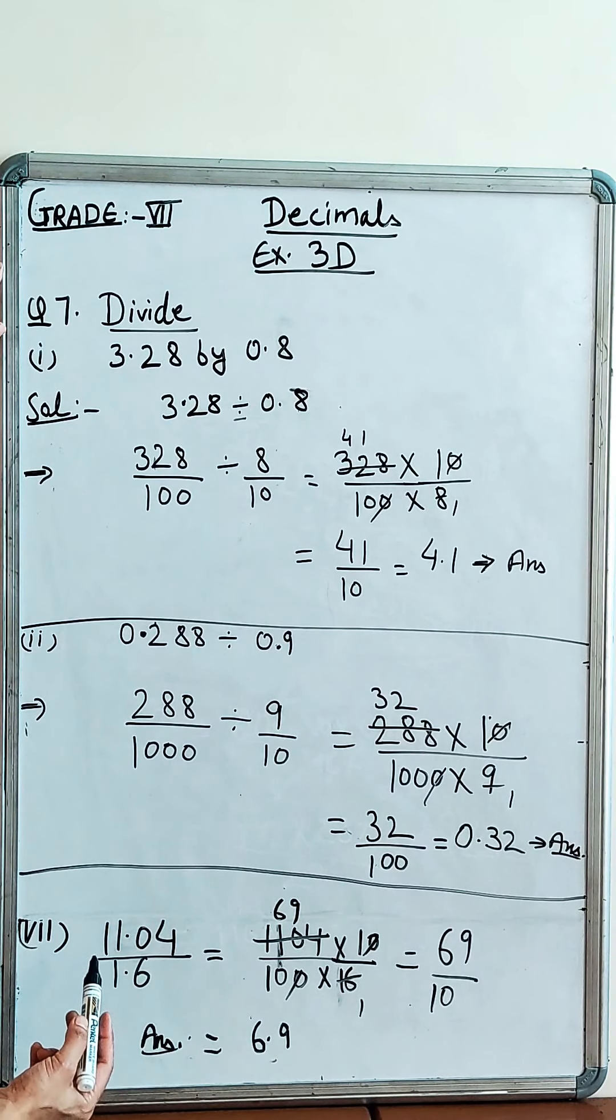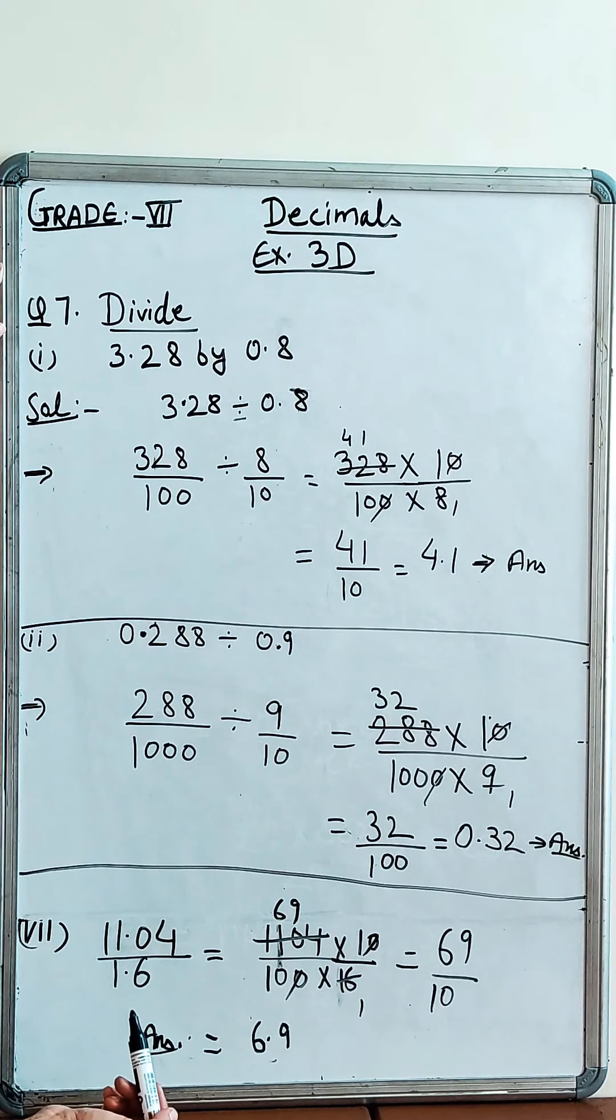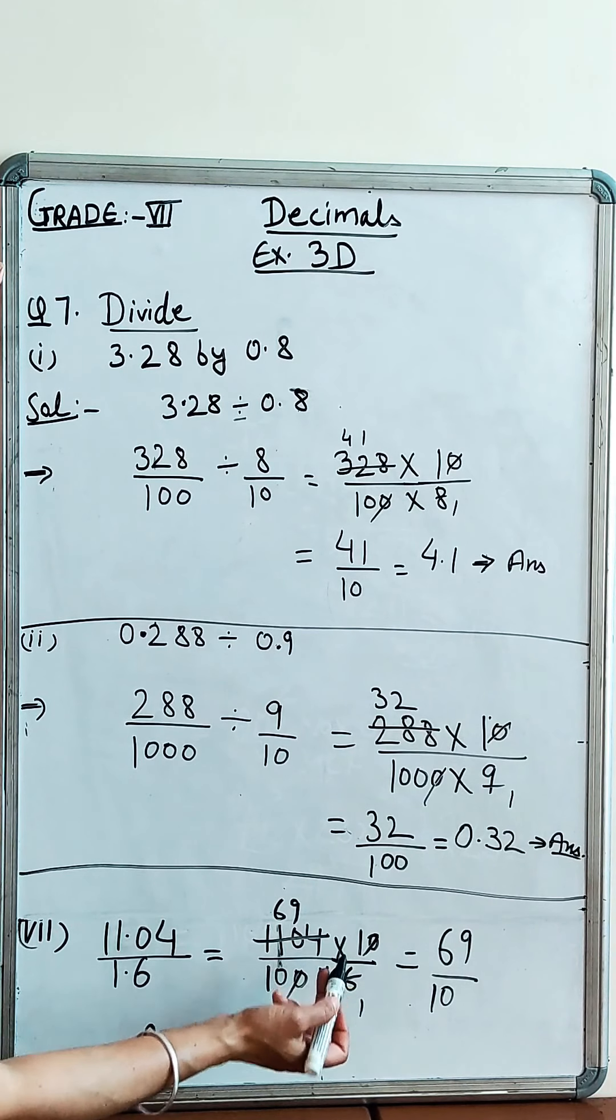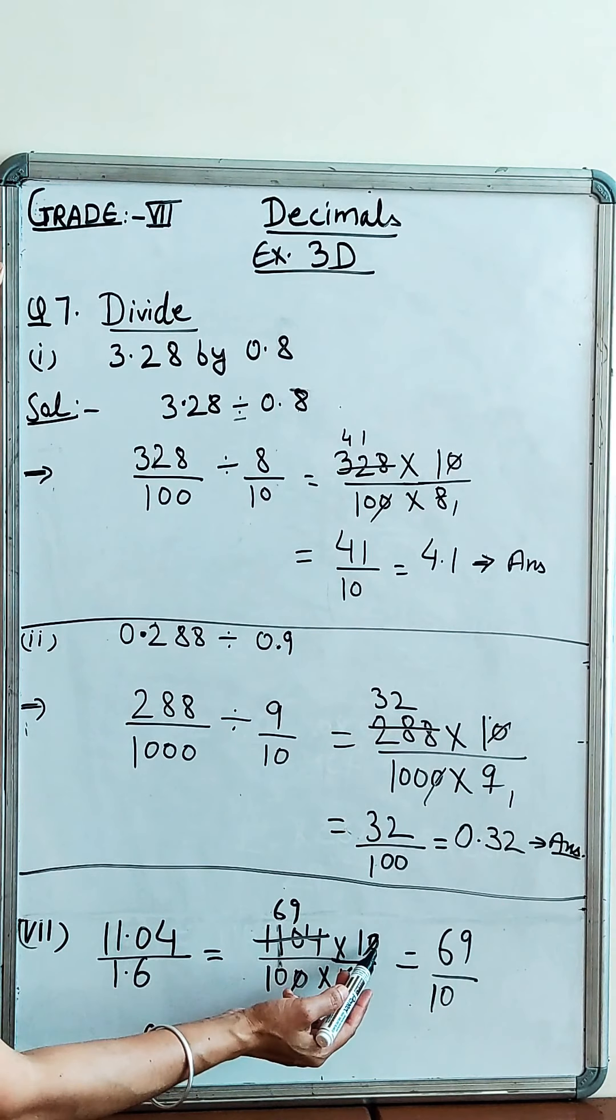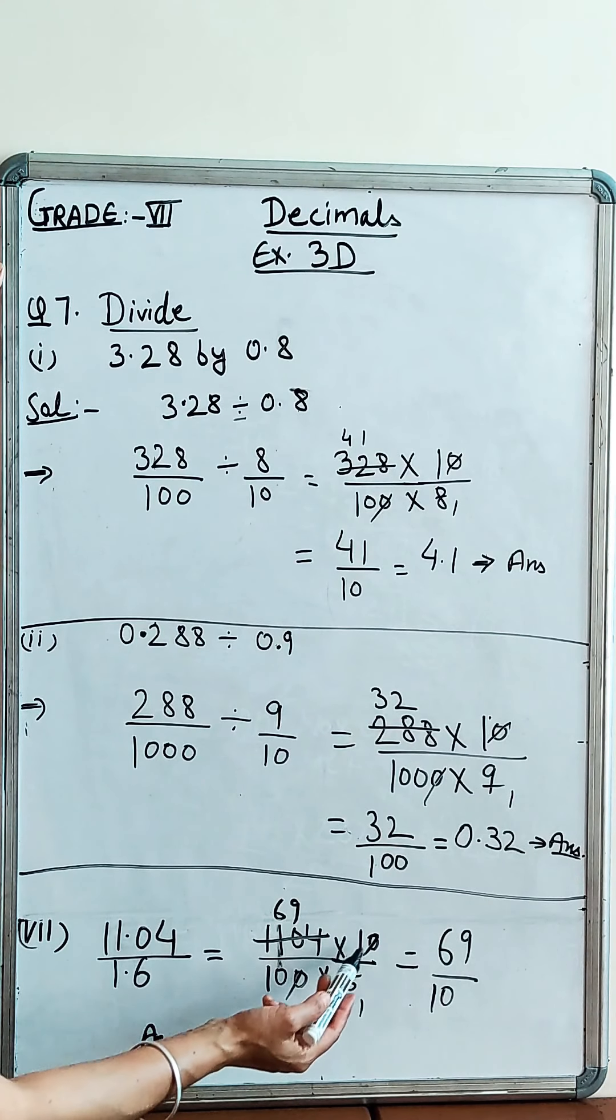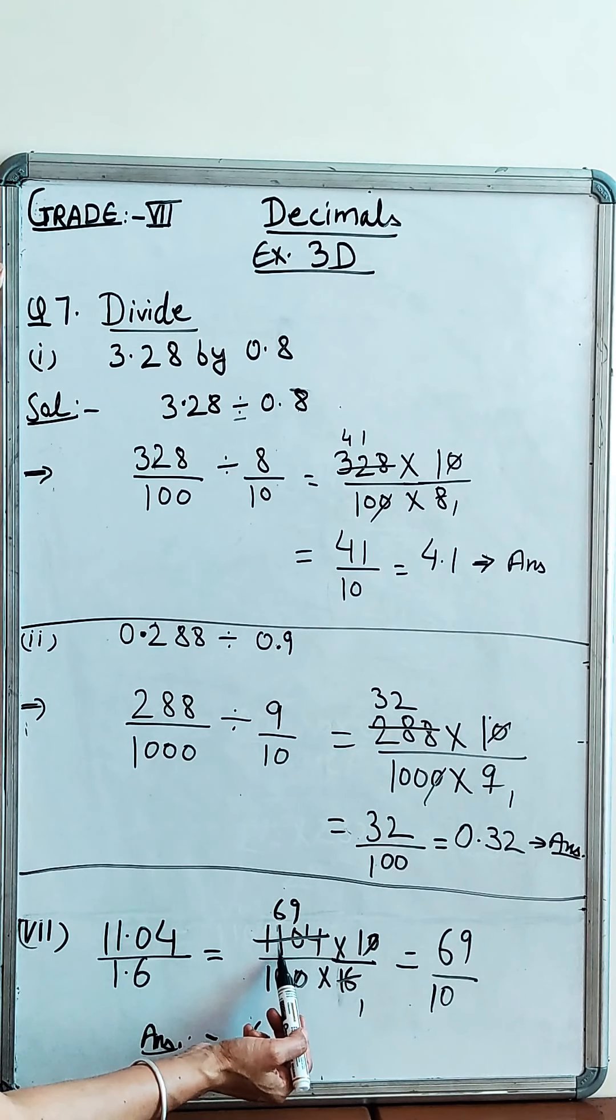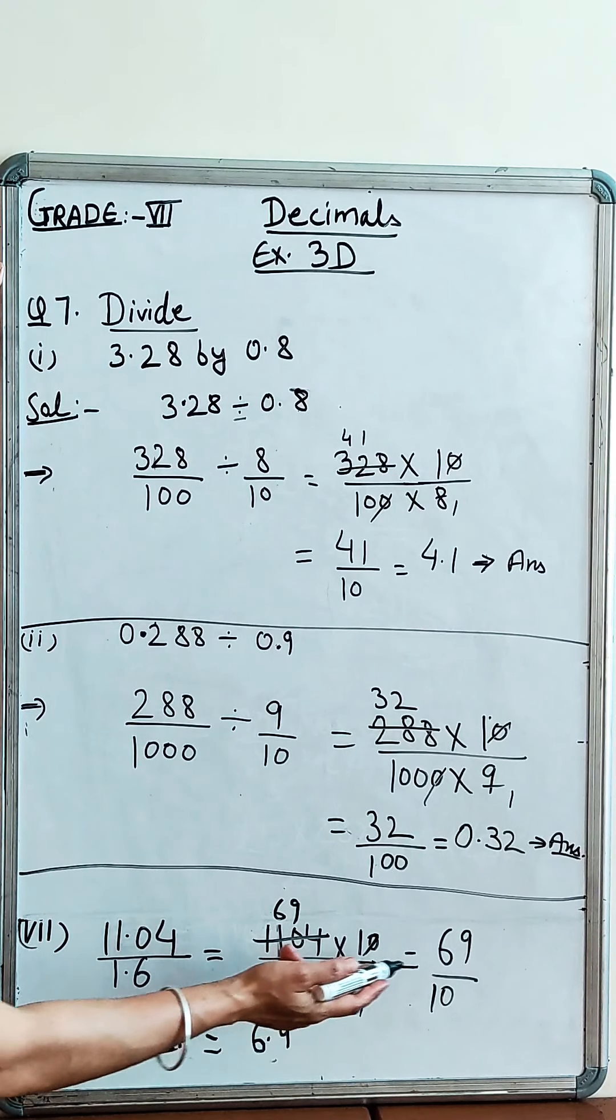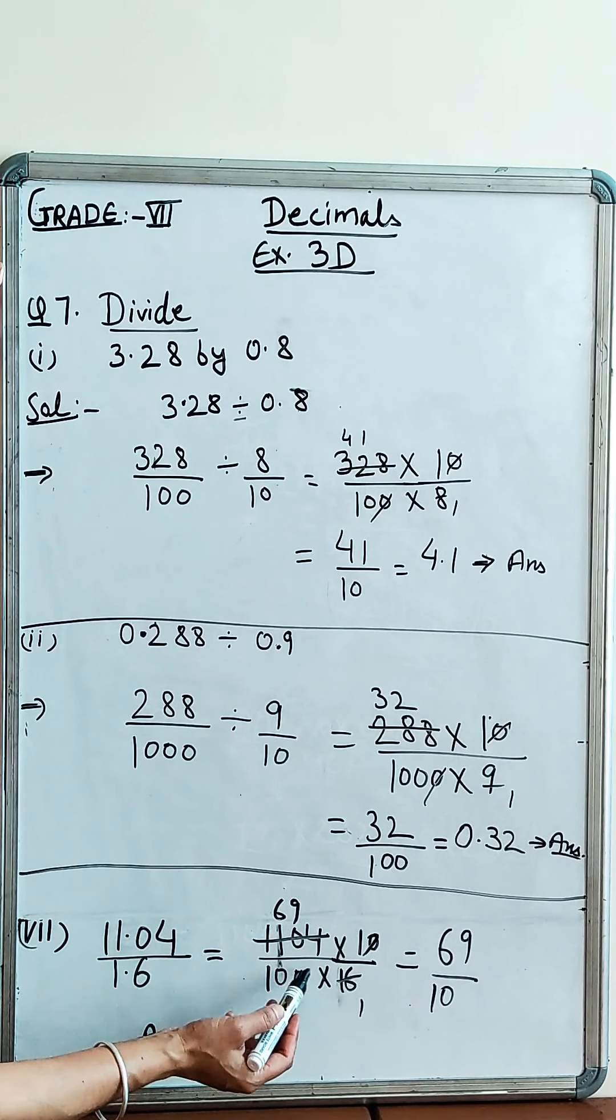Now, part 7. You have this question: 11.04 divided by 1.6. Now, same, similar way we have to do what we have done. We have to cancel the decimal and then we have to take reciprocal. What happens - 11.04 over 100, 10 over 16. Then, 1104 over 100, 10 over 16 divided.